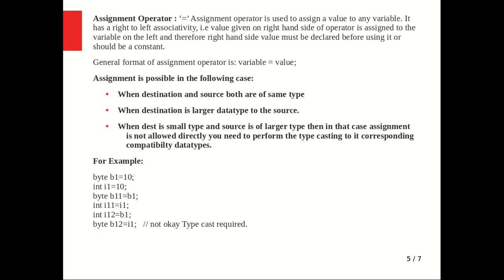The assignment operator equals to is used to assign a value to any variable. It has right-to-left associativity, which means the value given on the right-hand side of the operator is assigned to the variable on the left-hand side. Therefore, the right-hand side value must be declared before using it.